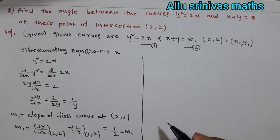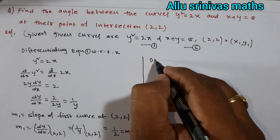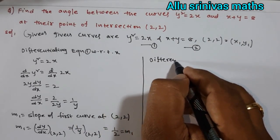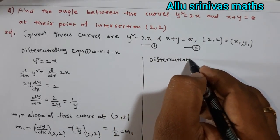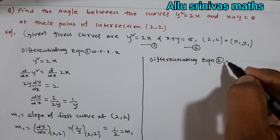Next we find the slope of the second curve. So differentiating equation 2 with respect to x.